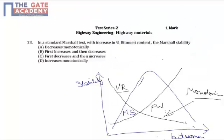The blue line is for Marshall Stability, so concentrating on this: Marshall Stability first increases and then decreases, making B the correct choice. Thank you.